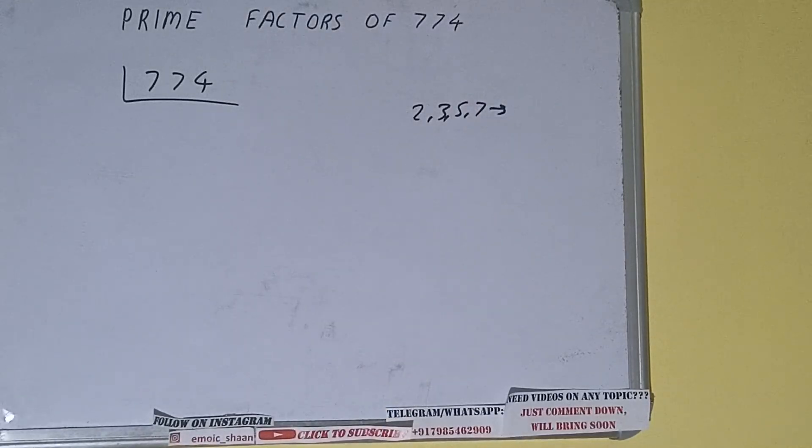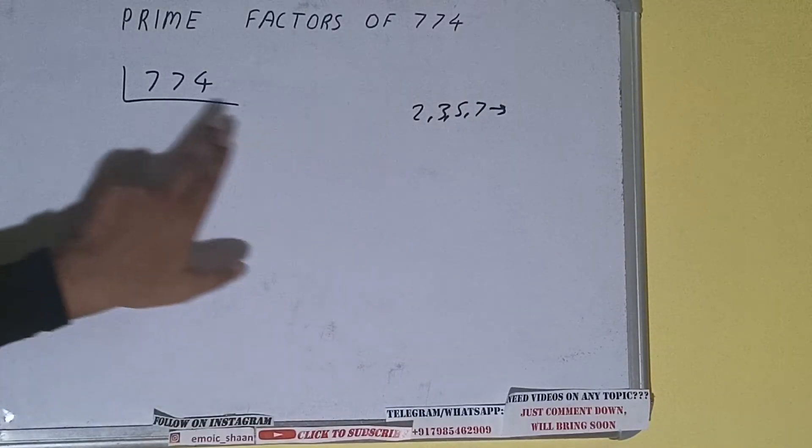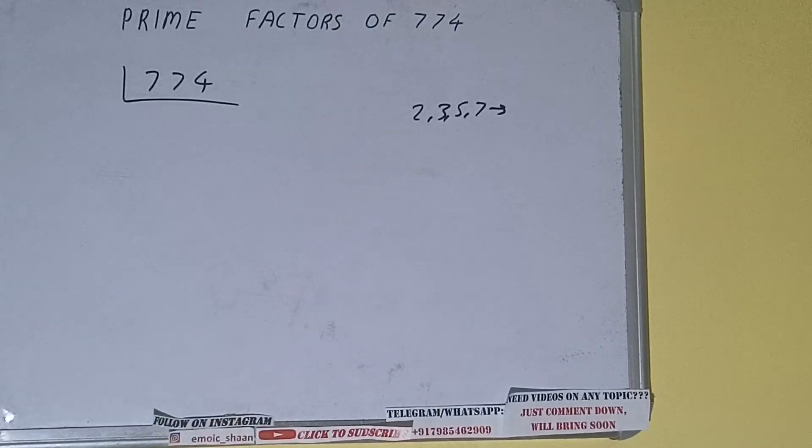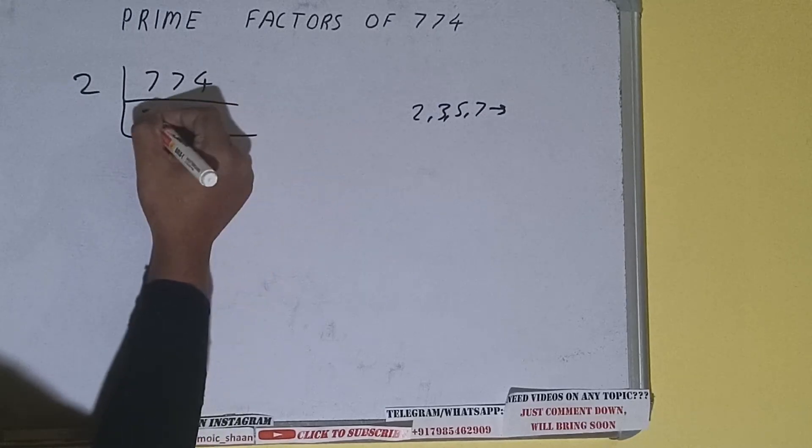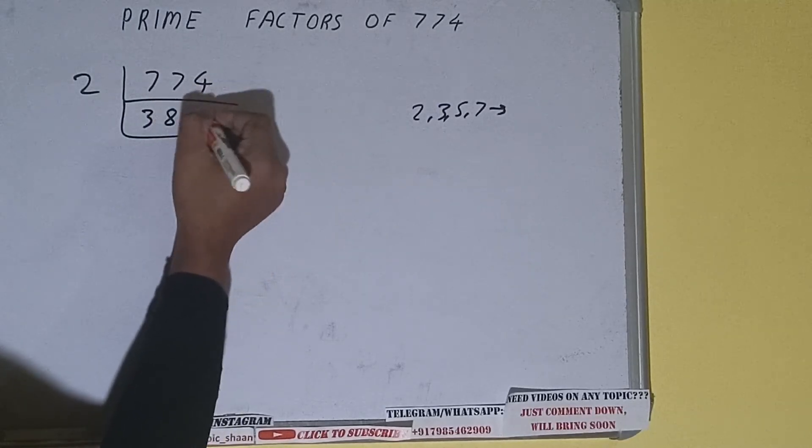So we'll check with the lowest prime number we have, that is 2. Is the number 774 divisible by 2? Yes it is, because the number is even. So divide it and we'll be having 387.